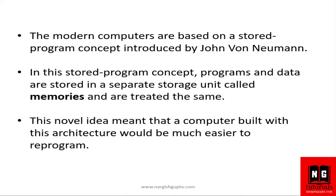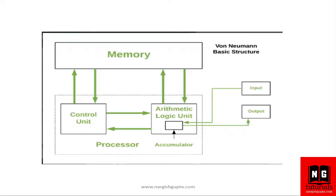These modern computer systems were introduced by John von Neumann. Let's see the von Neumann architecture. The main parts of the von Neumann model are: memory, control unit, arithmetic logic unit, input, and output.